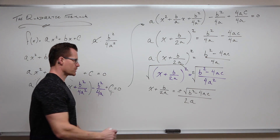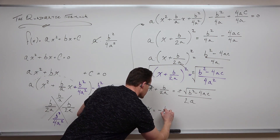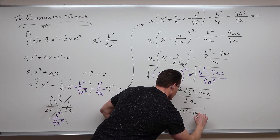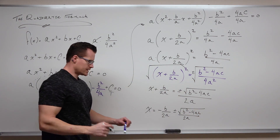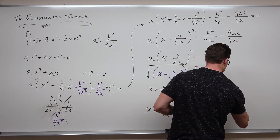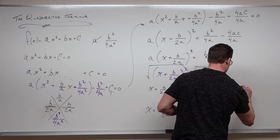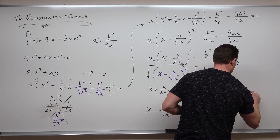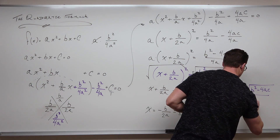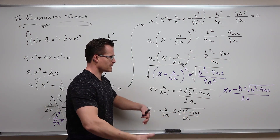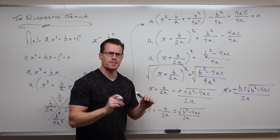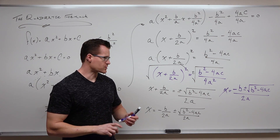Then we subtract b/2a from both sides. And by the nature of having a really convenient common denominator, we get to make this one fraction. The negative b floats up, the plus-or-minus floats up, the square root of b² − 4ac, and numerators combine on the numerator. Keeping the denominators the same when adding and subtracting fractions, we get all of it over 2a.